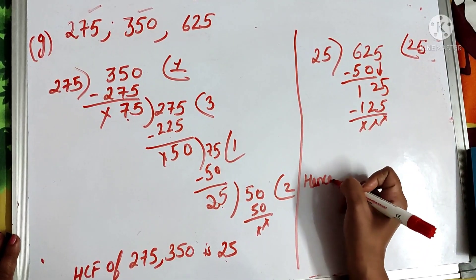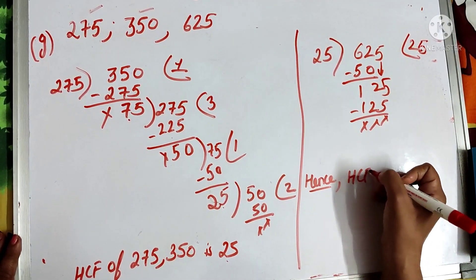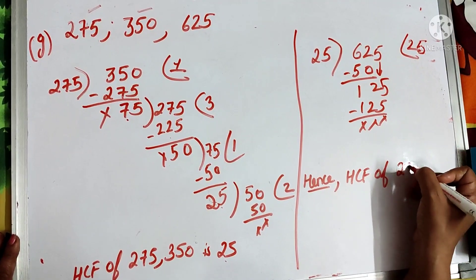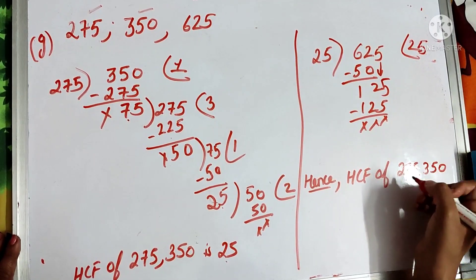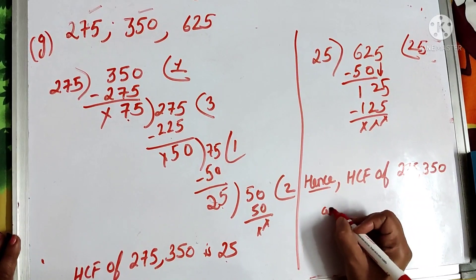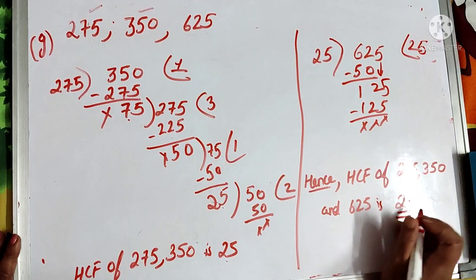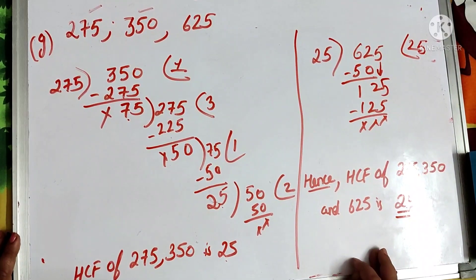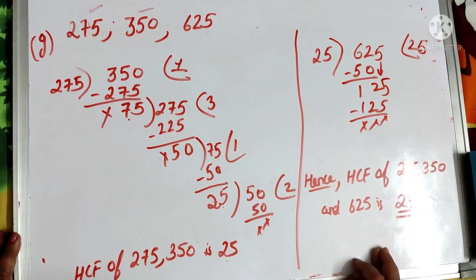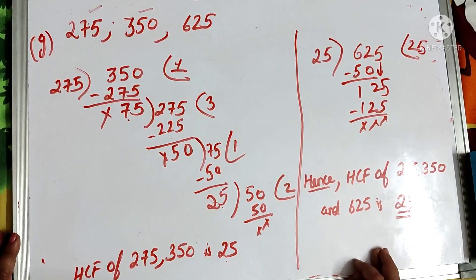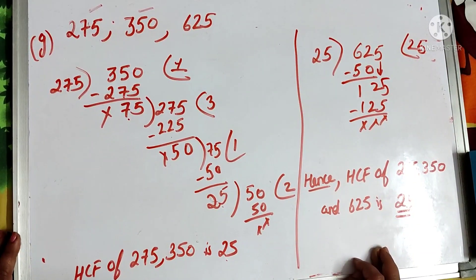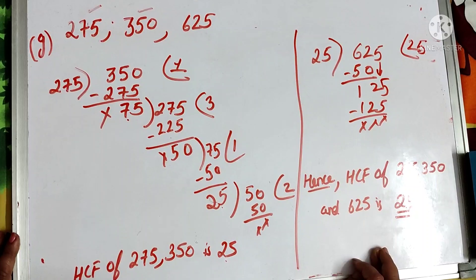Hence, HCF of 275, 350, and 625 is 25. In this way we solve HCF of 3 numbers by long division method. I am sending the PDF of this question — it is exercise 5C, question number 3. Do that assignment in your classwork copy, and if you have any doubt, you can message me regarding this question.